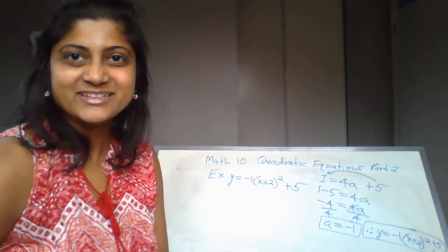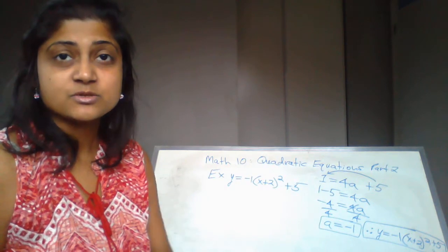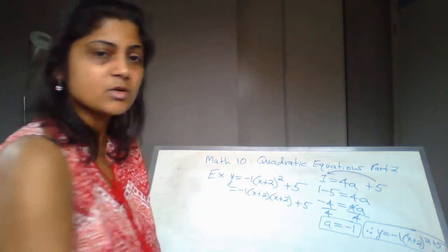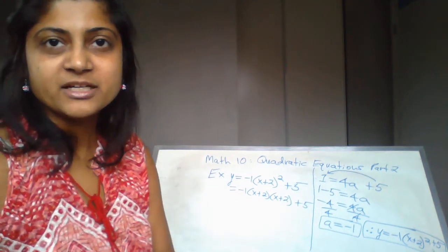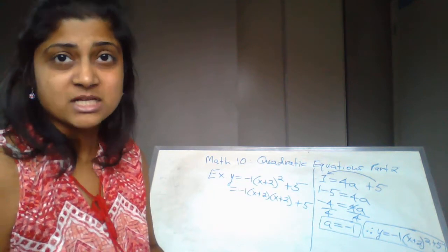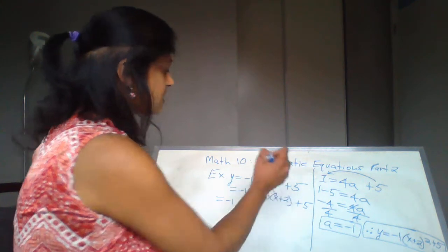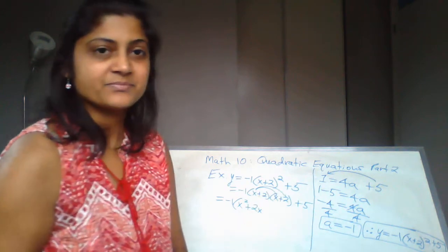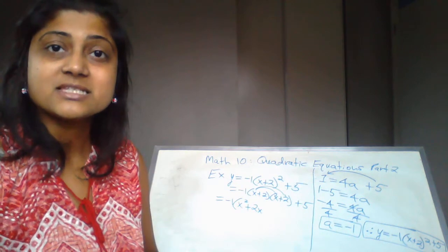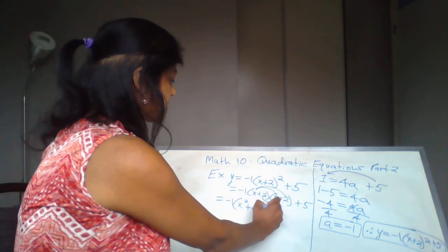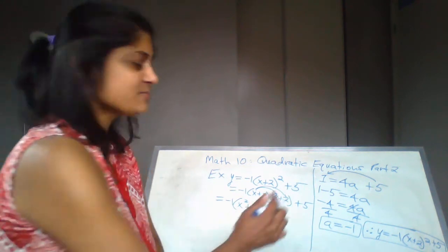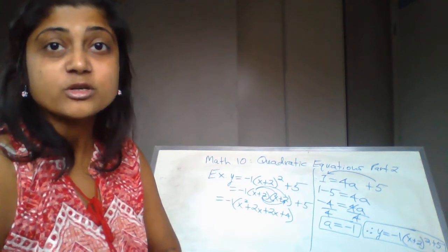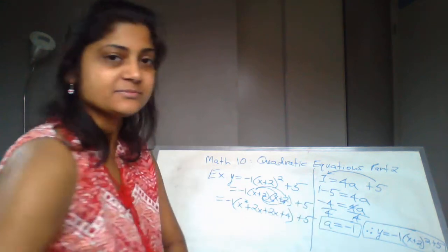Because it's (x + 2) whole squared, I write it two times: (x + 2)(x + 2) + 5. I'll keep the negative 1 outside the whole time. Using the FOIL method: x times x = x², x times 2 = 2x, 2 times x = 2x, and 2 times 2 = 4. So inside the brackets we have x² + 2x + 2x + 4, and plus 5 remains outside.